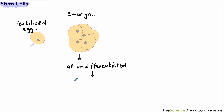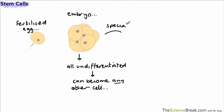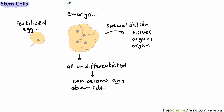That ball of cells is what we describe as undifferentiated - all the cells in that ball are undifferentiated. The key point is that those undifferentiated cells can become any other type of cell that is needed in the body. Under normal circumstances, in a normal pregnancy, they go through a period of specialization where they make specialized tissues, organs, and organ systems.